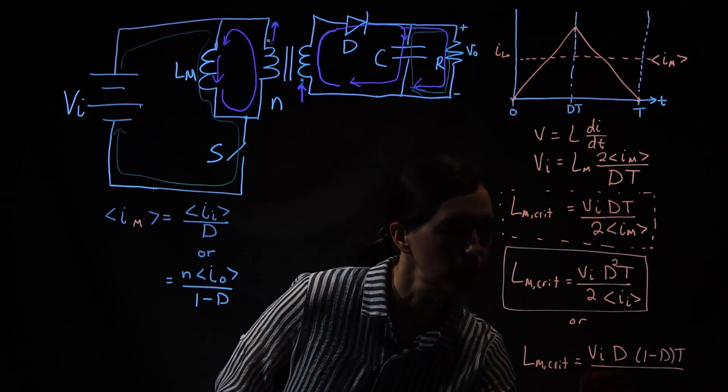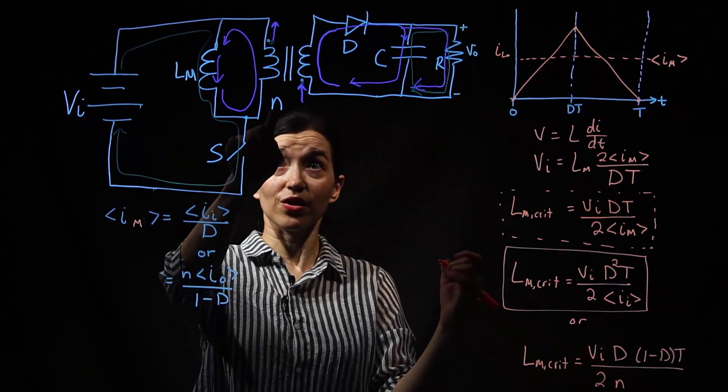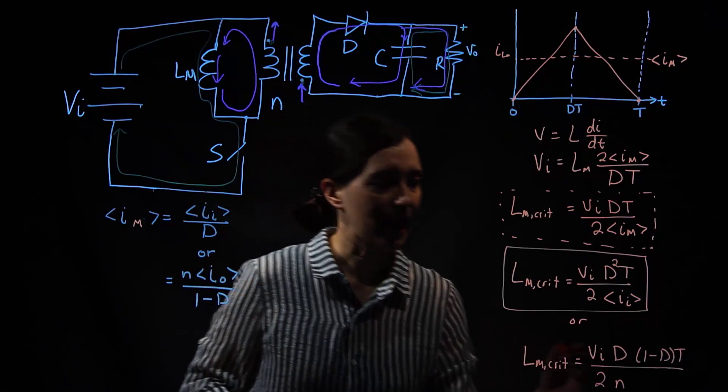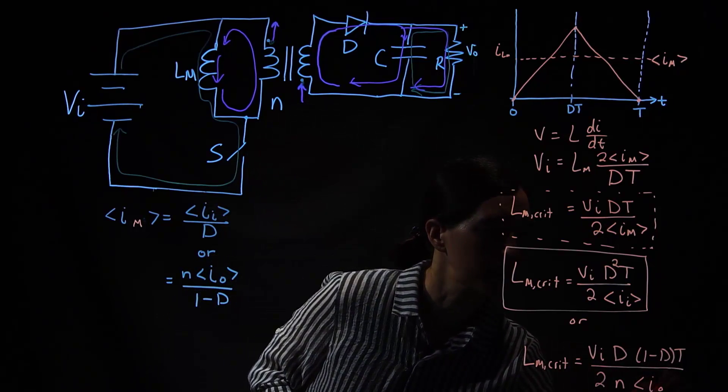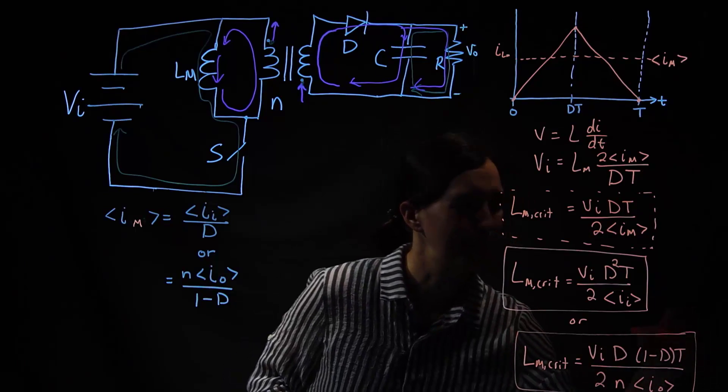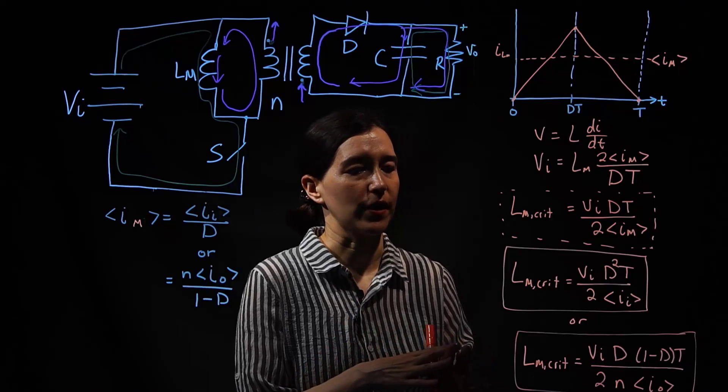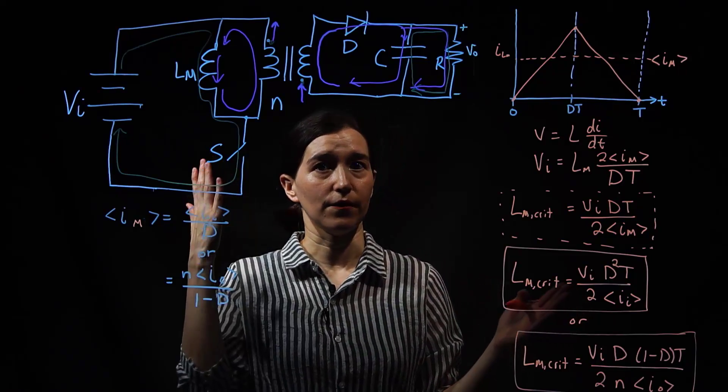In the denominator, we still have this 2. And we're going to get an n, little n, for the turns ratio of the coupled inductor. And a i out. So these are the two equations that you can use to figure out the critical inductance of the flyback converter.